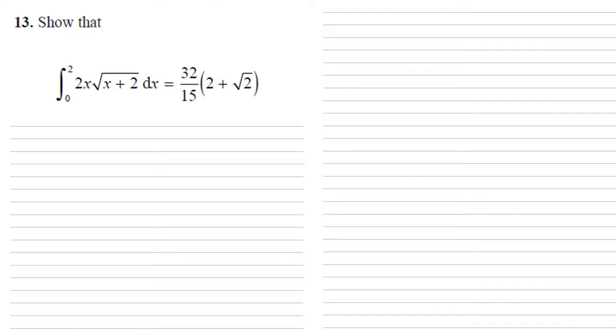So we want to show that the integral between 0 and 2 of 2x times square root of x plus 2 dx is equal to 32 over 15 times by 2 plus root 2.